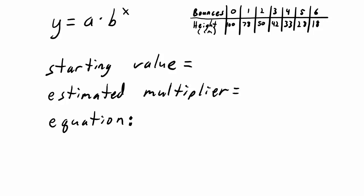Our starting value is 100. Our estimated multiplier is 0.76. And now we can write our equation. Y equals 100 times 0.76 to the x power.